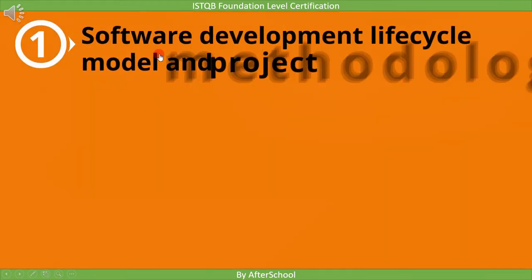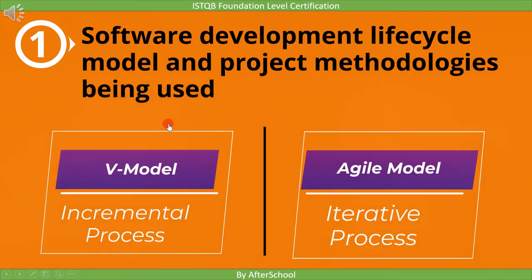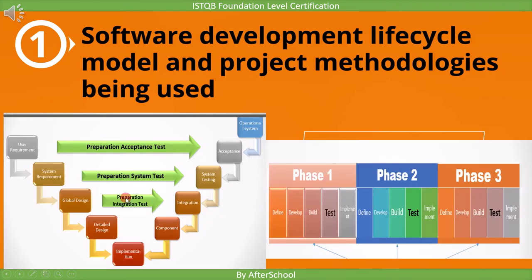The first context is based on the software development lifecycle model and project methodologies being used. To understand this, let's look at two lifecycle models: the V-model and the Agile model. The V-model is an incremental process where all phases are done sequentially. In the Agile model, each phase is repeated throughout the development. We can see this in a picture. In the V-model, the complete project is implemented incrementally and once the development phase is done, the corresponding testing activity starts. In Agile, a few features are implemented in a week and testing is done for that feature.